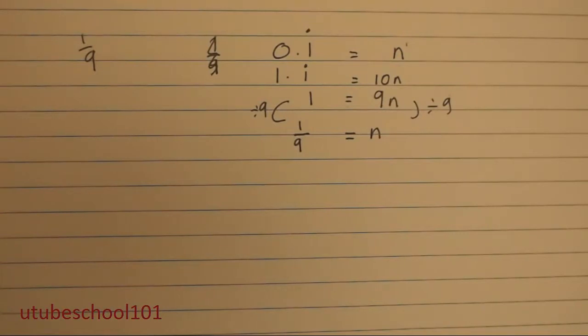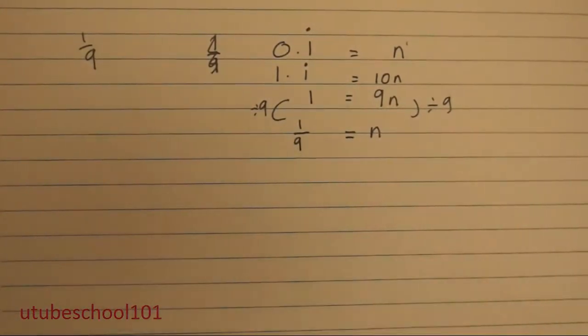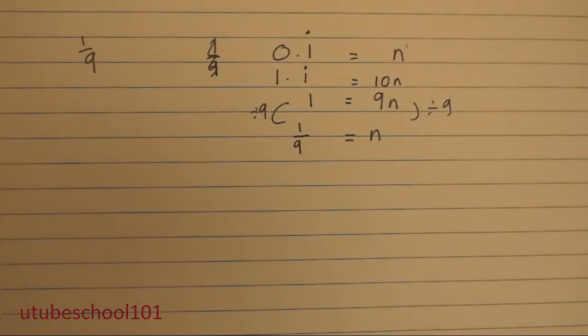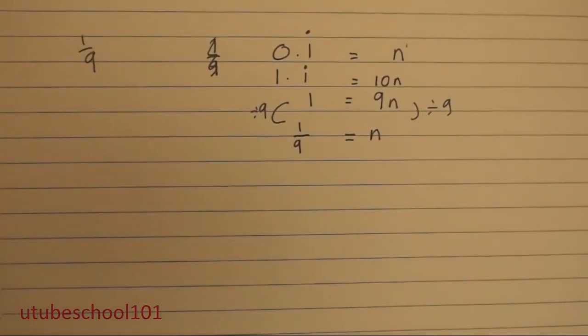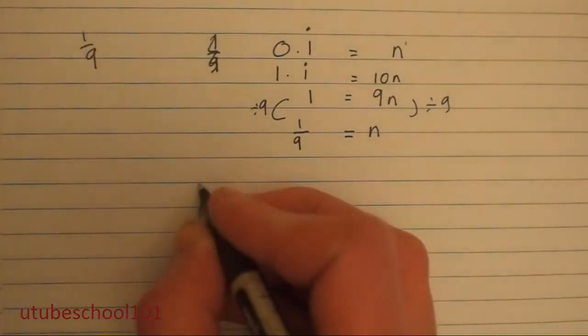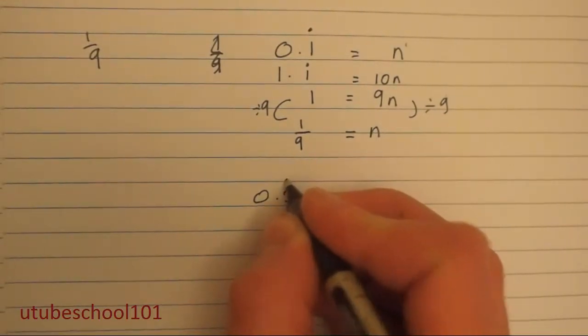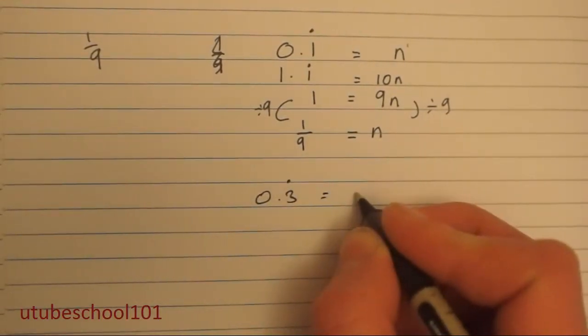So that's the method of how to do it. Let me show you another example. Let's try the fraction 1 third. Most of us will know that 1 third is equal to 0.3 recurring. And let's show you another proof of how to work this out.